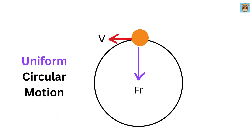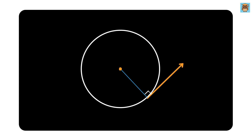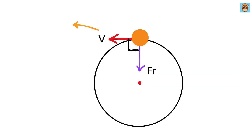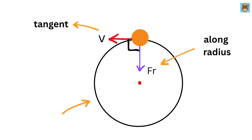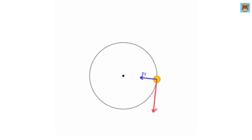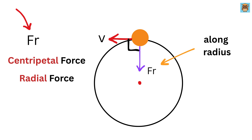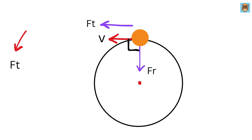Therefore, in case of uniform circular motion, force is always perpendicular to the velocity. In a circle, a tangent line is always perpendicular to the radius. So if the velocity acts as a tangent to the circle, the direction of this perpendicular force will be along the radius pointing toward the center. This inward-directed force keeps the object moving in a circular path, constantly changing the direction of the velocity without changing its magnitude. We refer to this as the centripetal force or radial force.